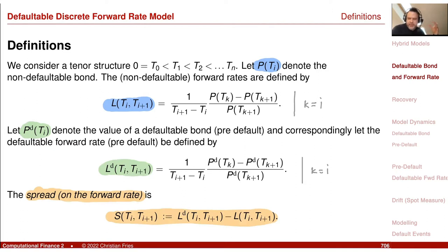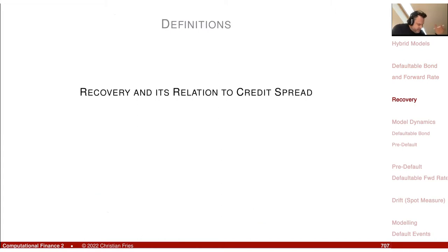Usually the defaultable rate should be above the non-defaultable. I have to pay more interest because the lender wants to have covered the risk of not getting the money back. So I would expect the spread S to be a positive quantity. Now there is an interesting first aspect with the recovery and its relation to this credit spread. The recovery is the amount you receive in case of default.